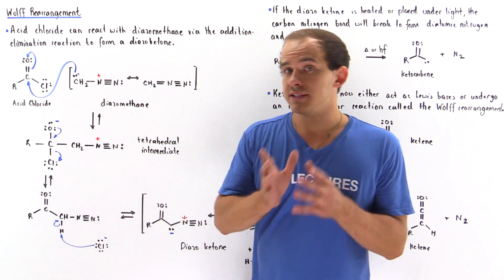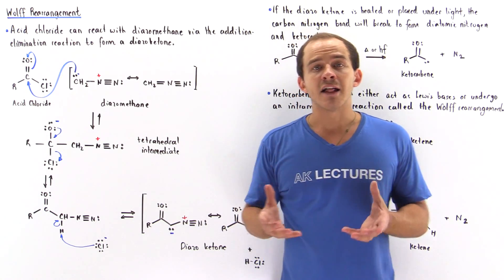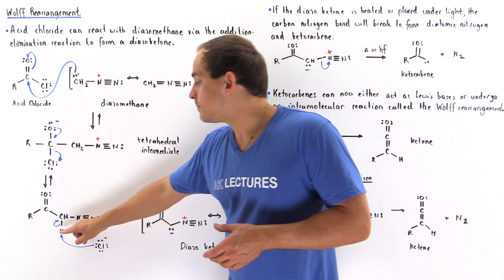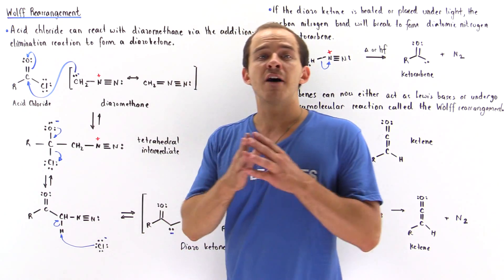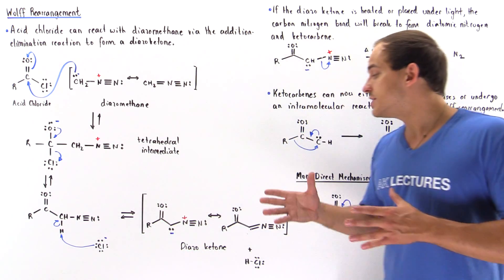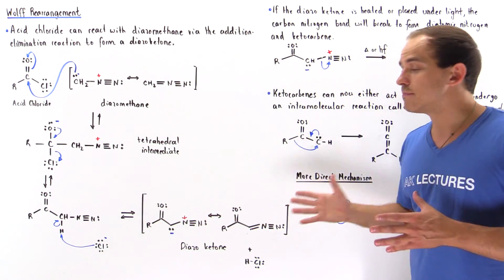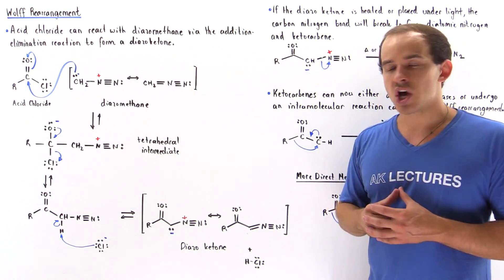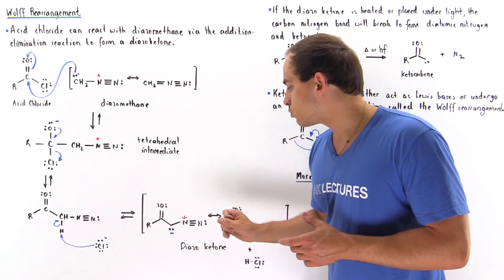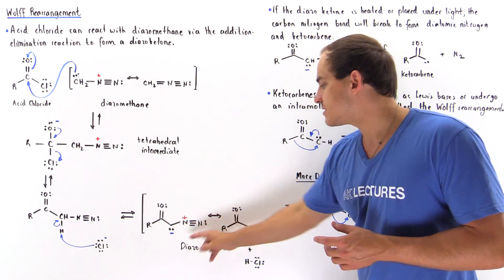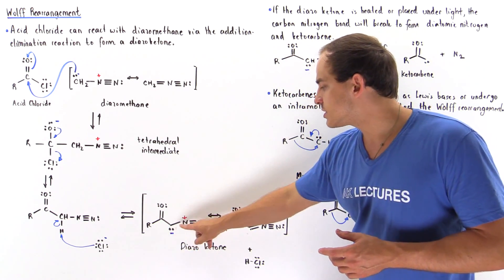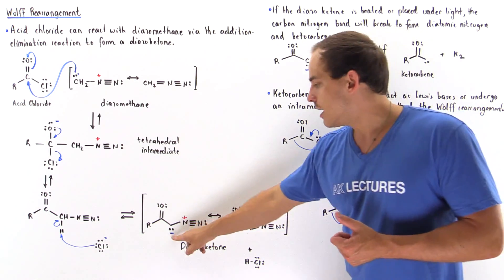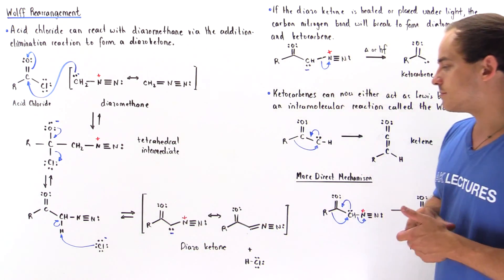This molecule contains an acidic alpha hydrogen, and the chloride, acting as a strong base, will deprotonate this alpha hydrogen, forming the resonance-stabilized intermediate known as our diazoketone. We have this ketone group, and we have resonance stabilization between this carbon and this nitrogen, so the charge is delocalized between these two atoms.